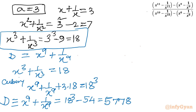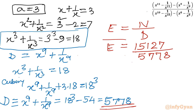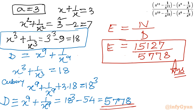We can now write our answer: expression E equals numerator over denominator = 15,127 / 5,778. There is no common factor between these two numbers, so this is our final answer. I hope this video is helpful to you. Do not forget to like, share, and subscribe. Bye-bye till next video. Good luck and take care of yourself.